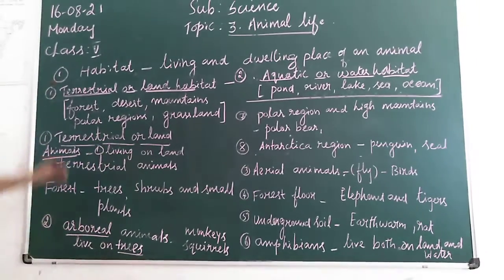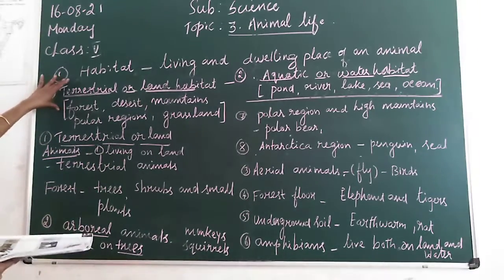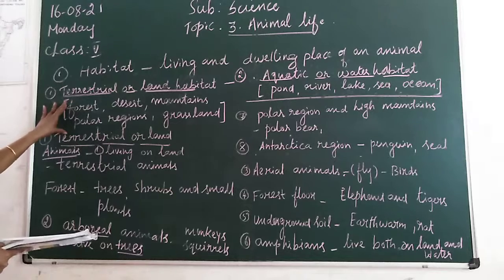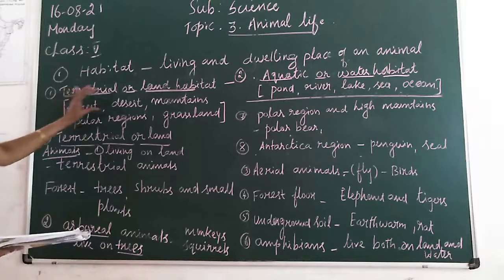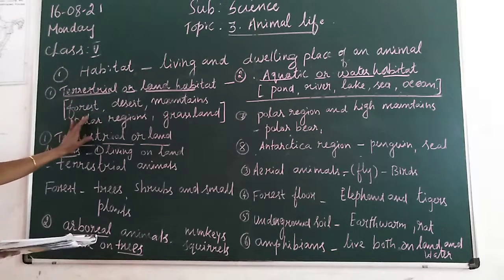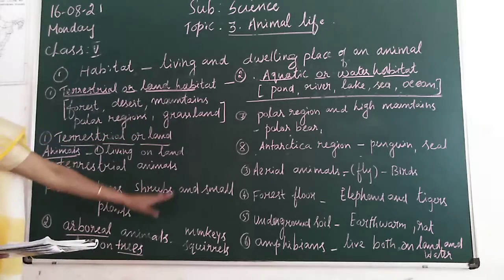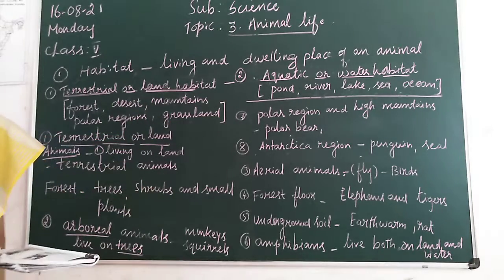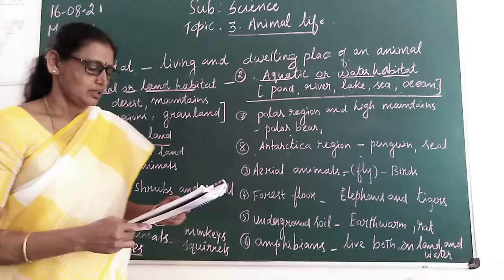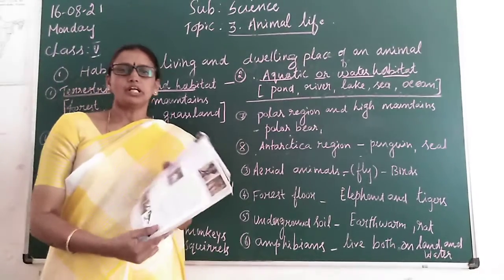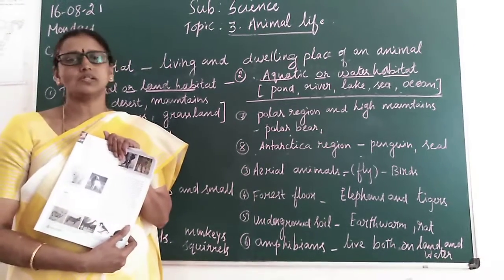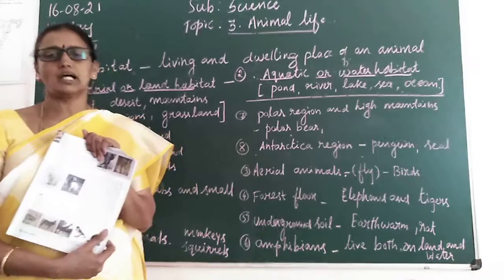So we have learnt about terrestrial habitat and what animals live in forests, deserts, mountains, polar regions, and grasslands. Clearly understood now. Learn this lesson children. Thank you children, see you in the next class.